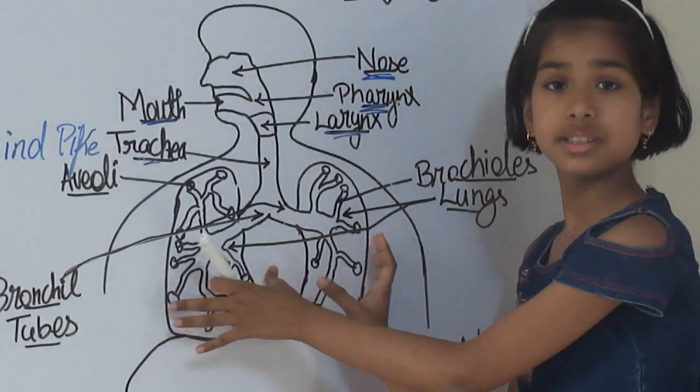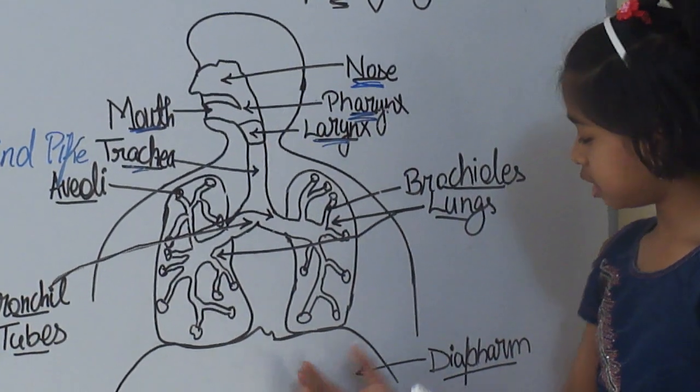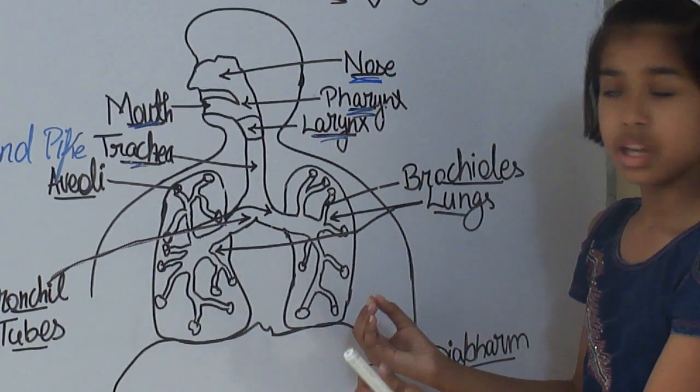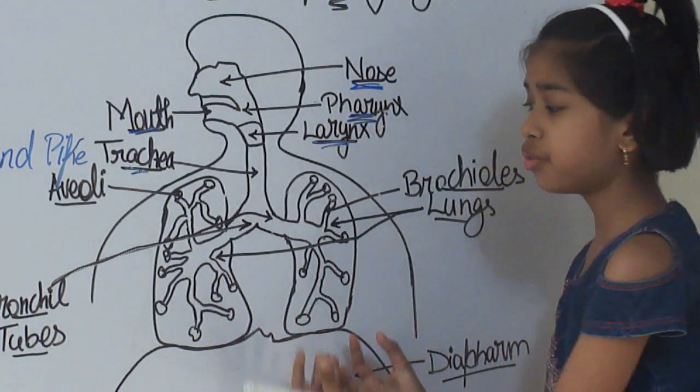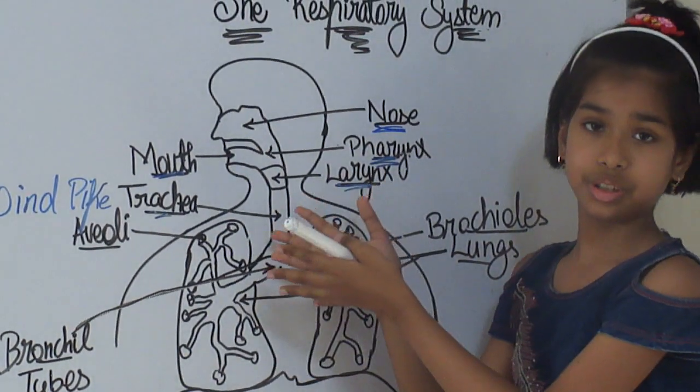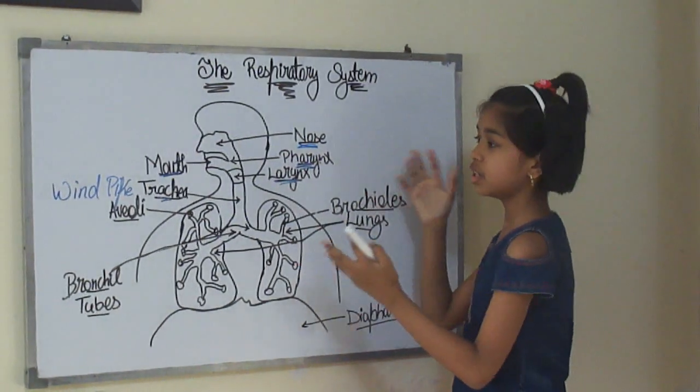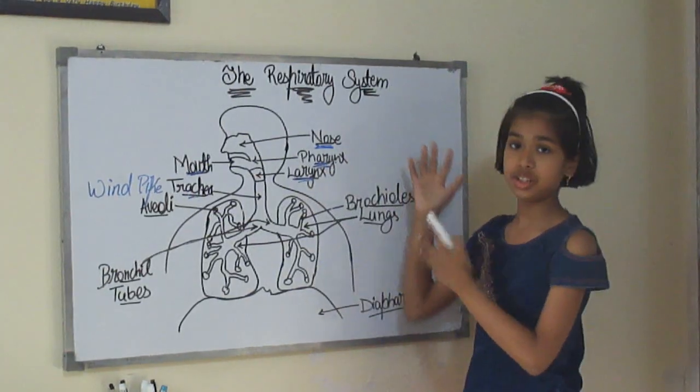It goes down and our lungs start filling with air or oxygen. And when this diaphragm goes up, the lungs are forced to give out the air. So, these are the parts in the respiratory system.